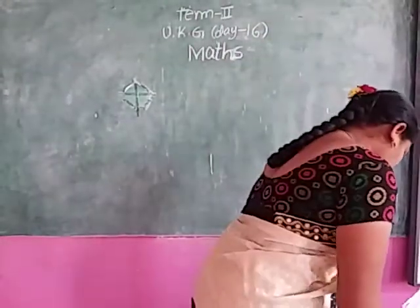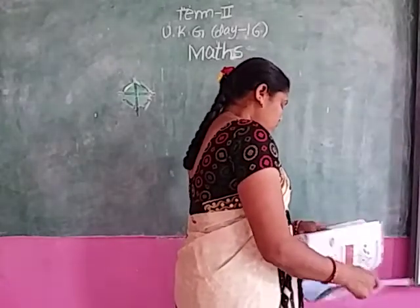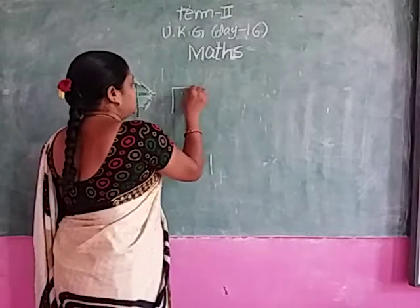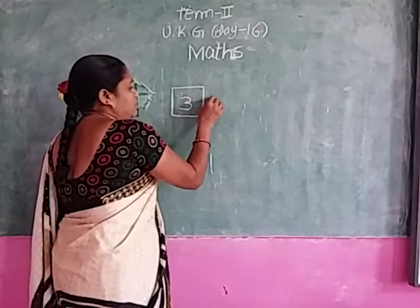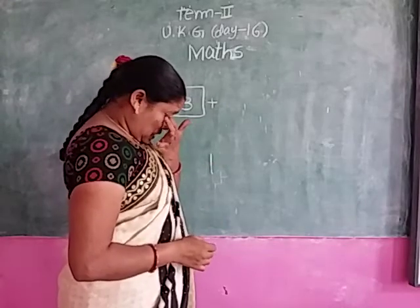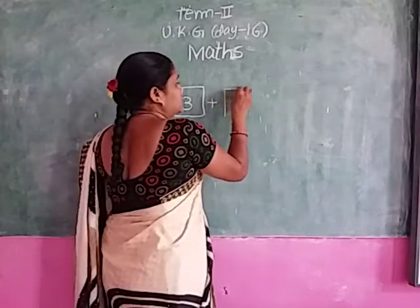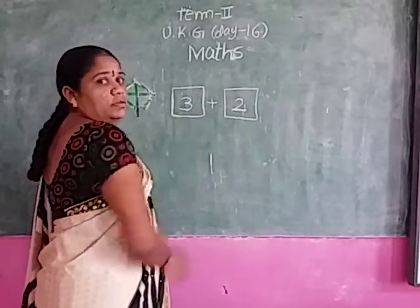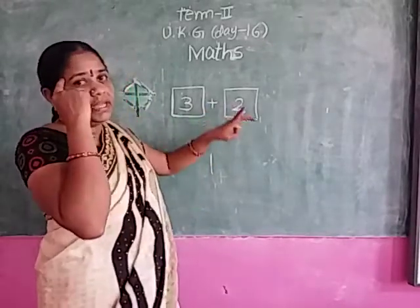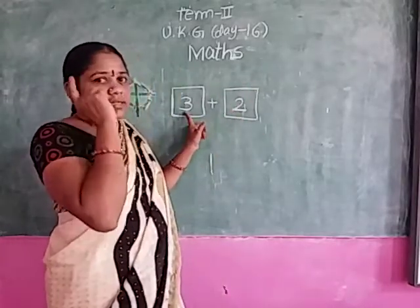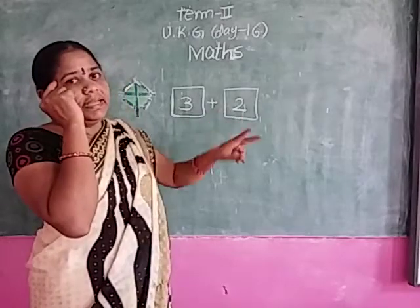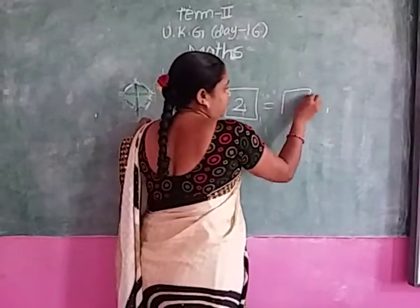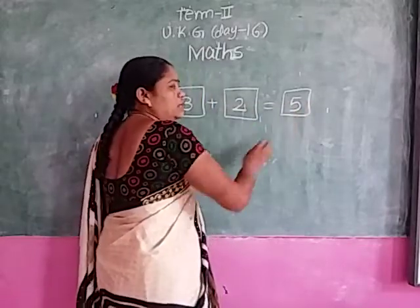Vicky has 3 chocolates. Keep 3 in your mind. Plus, Vicky brings 2 more chocolates. Now how many are there altogether? Keep 3 in your mind, open 2 fingers. After 3: 4, 5. What is the answer? 3 plus 2 equals 5.